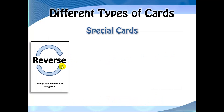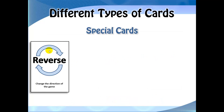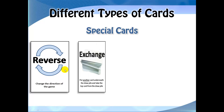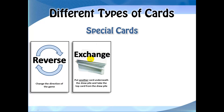There are 4 types of special cards. The first one is a reverse card, which means we will change the direction of the game. Next we have an exchange card. Upon discarding this card, you will put another card underneath the pile, and then draw the top card. This is called exchange.